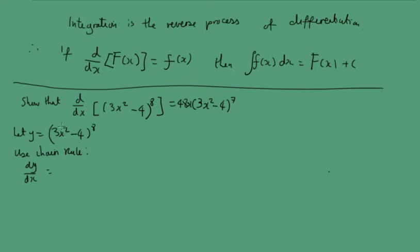So, we will have 3 times 2 is 6x comes out here and then we've got the 8 coming down and then we've got our (3x² - 4) raised to the power of 7. So, that will give us 48x(3x² - 4)⁷. So, that's what we want to show.